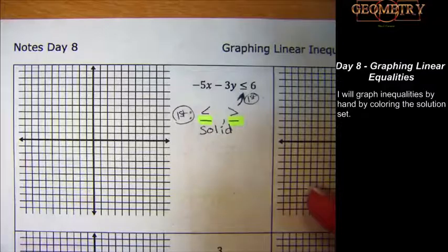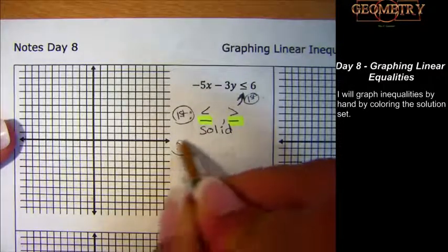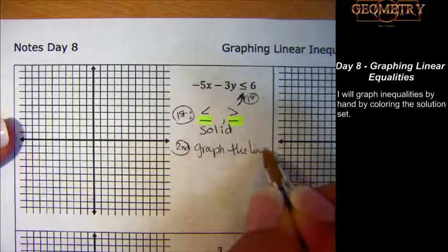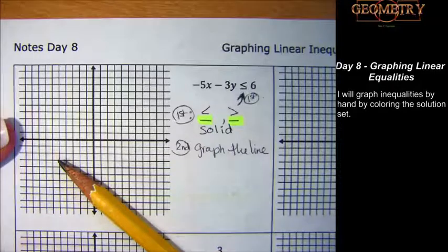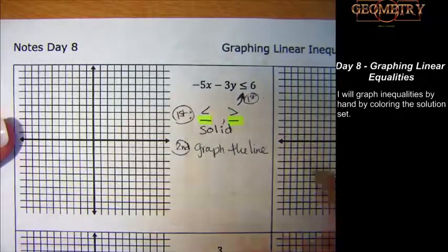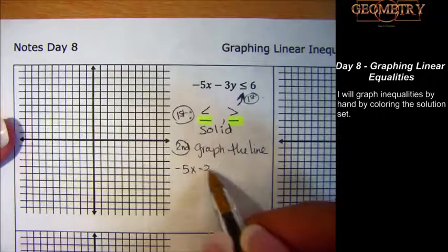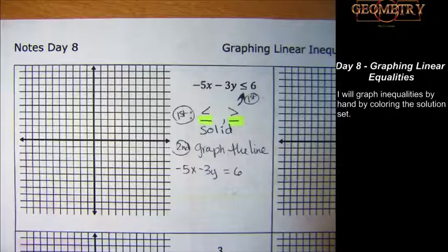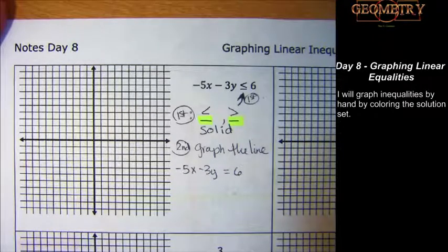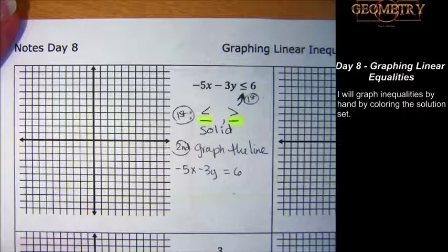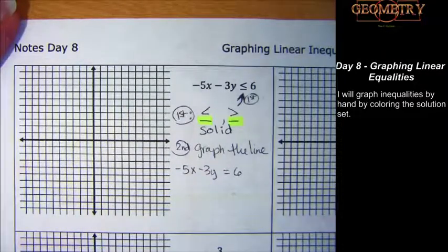Now I'm going to graph this just like we would any other normal linear equation of its type. So graph the line — I'm going to graph it in pencil first and then darken it up with colors. I'm going to use the intercepts to graph this because it's in standard form. So I'm going to set x equal to zero, set y equal to zero, see what the other variable is, and then plot my points.